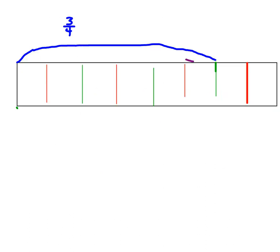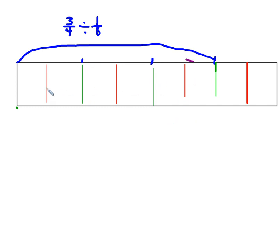Let's look at a fraction. This is 3/4 — each green line is a fourth, so here's 1/4, 2/4, 3/4, and 4/4. I have 3/4 divided by 1/8. The red and green lines together represent eighths: 1 through 8. So it's 3/4 divided into 8th pieces. Counting the pieces: 1, 2, 3, 4, 5, 6. So 3/4 divided by 1/8 is 6.